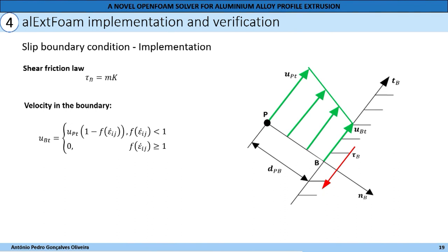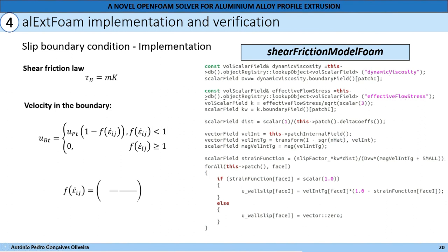As previously stated, the slip boundary condition implementation was performed using the shear friction law. The shear friction law is calculated by multiplying the friction coefficient M with the von Mises shear yield stress K. In order to develop the boundary condition, the velocity at the boundary was defined, being dependent on a strain rate function. If the strain rate function is 1 or higher, the velocity at the boundary is 0, but if it is lower than 1, it is equal to the velocity of the nearest cell multiplied by 1 minus the strain rate function. The boundary condition was named the shear friction model form, and first the viscosity at the boundary is assessed from the constitutive equation.